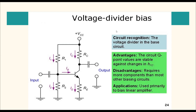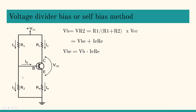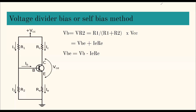Let us now get to the calculations. Voltage divider bias is also known as the self-bias method. In your exam, any type of bias can be asked. What you need to do is: draw the circuit diagram, explain why it is known by that particular name, and then go ahead with its formula and start solving. Make a tabular format and list all the formulas.